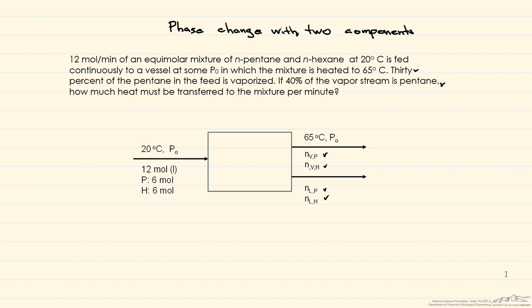So 30%, 0.3, of the pentane in the feed, which is six moles, and remember we're doing this per minute, is vaporized. So that's going to be equal to the number of moles of vapor that's pentane, and that's equal to 1.8 moles.